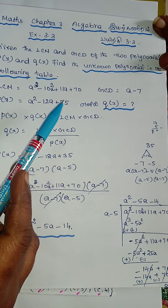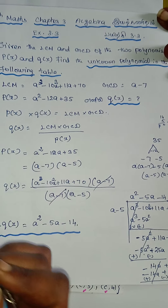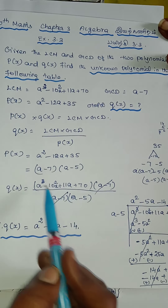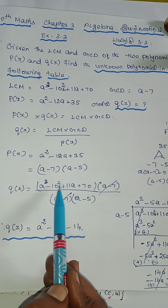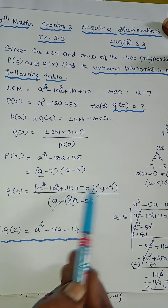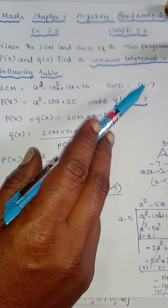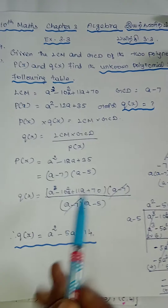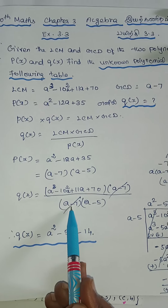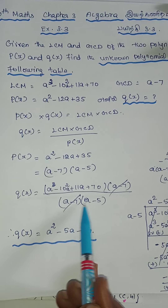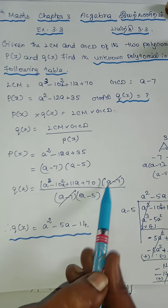Now GCD and LCM — we have to solve the problem. LCM is (a minus 7). P of X is (a minus 7), so the two terms are cut.